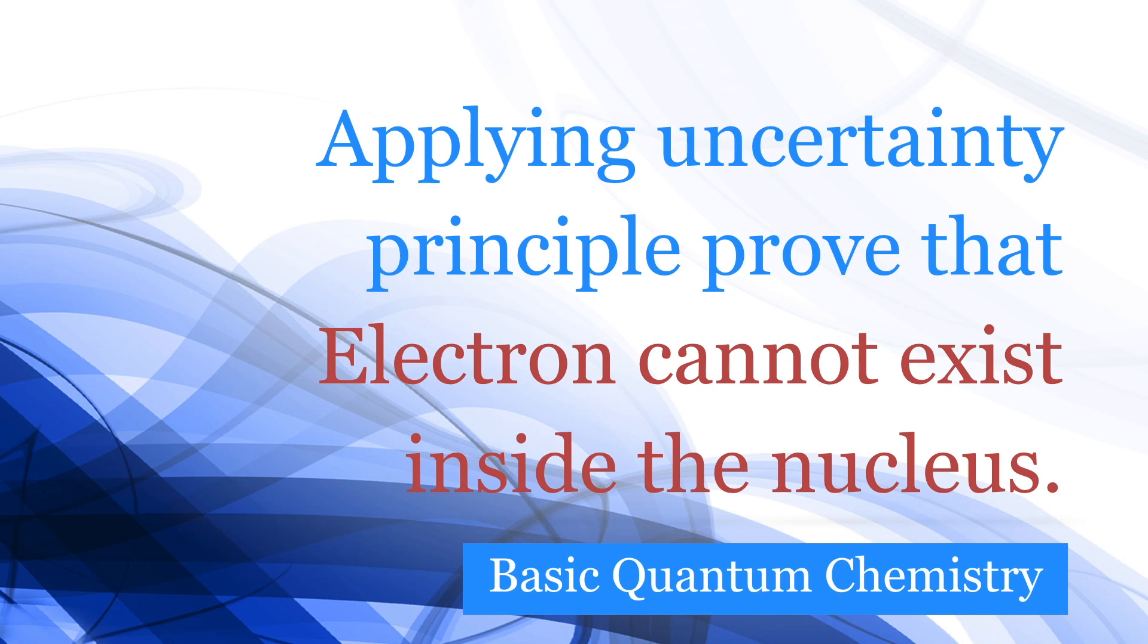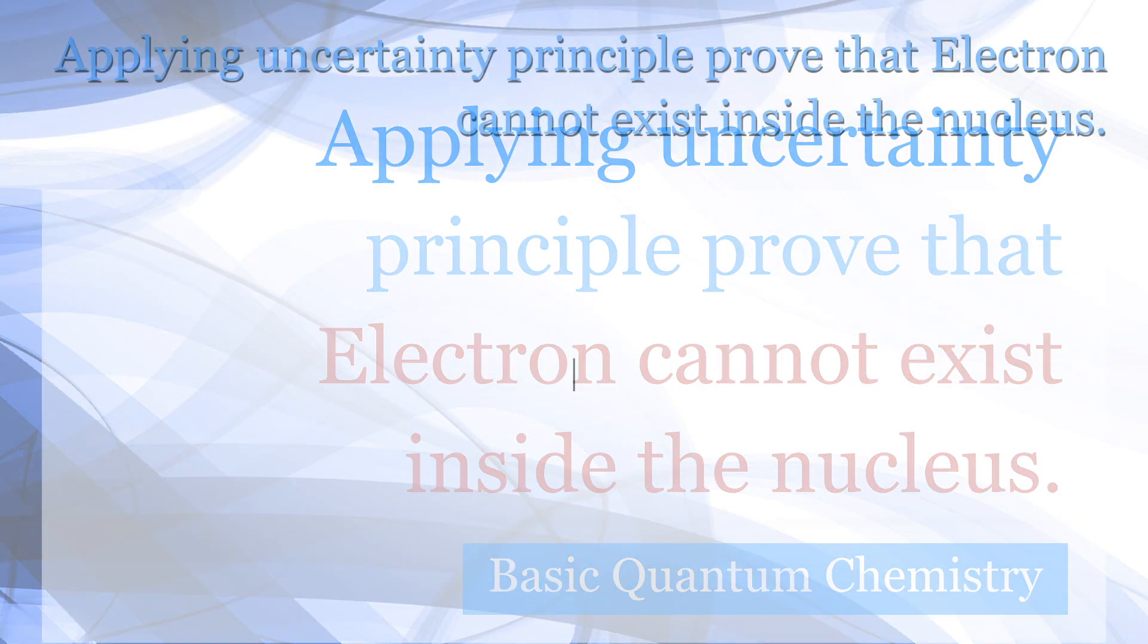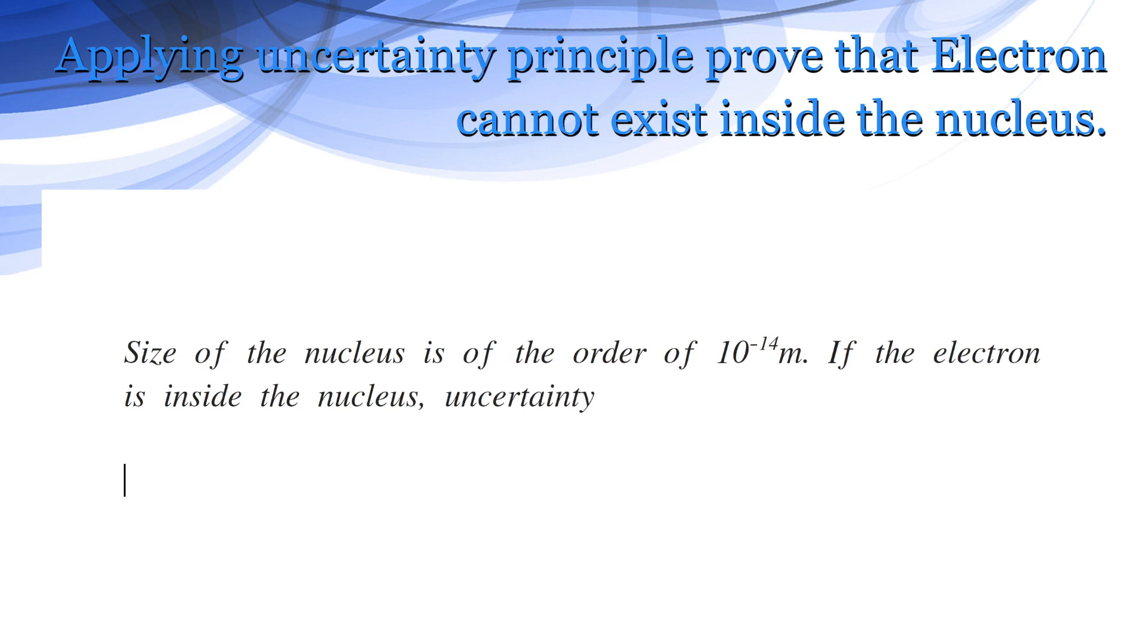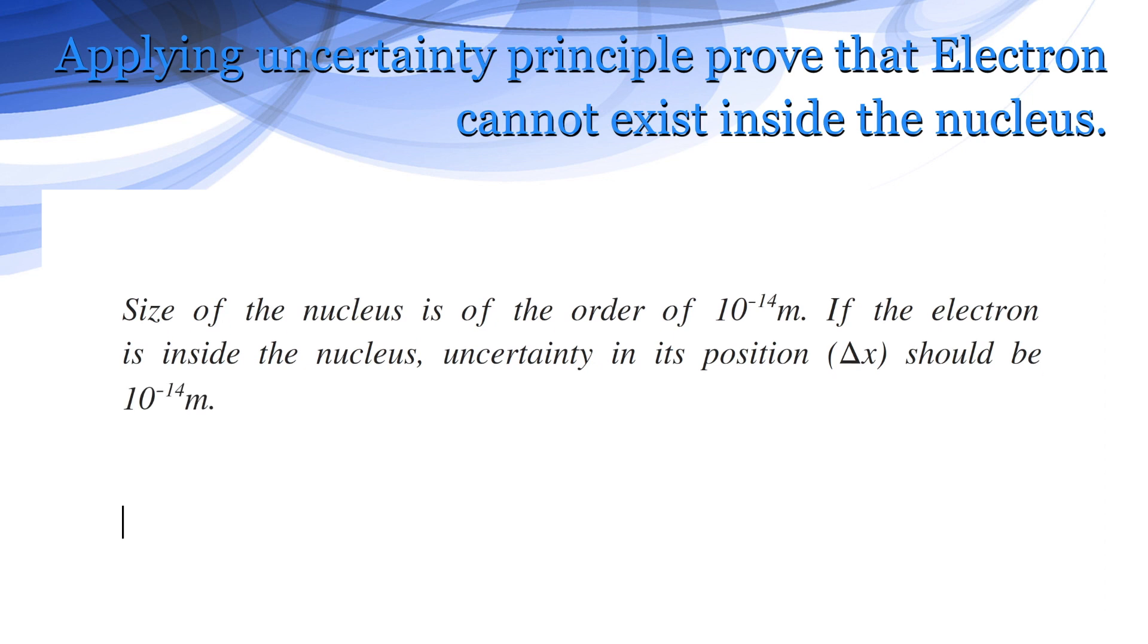Applying uncertainty principle proves that electrons cannot exist inside the nucleus. Size of the nucleus is of the order of 10 to the power minus 14 meters. If the electron is inside the nucleus, uncertainty in its position delta x should be 10 to the power minus 14 meters.